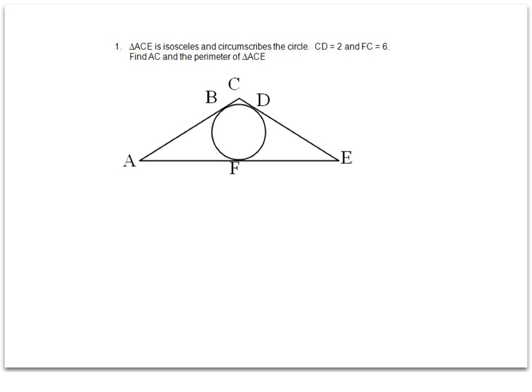Let's go ahead and set up the diagram with what we know. Now, because the triangle is isosceles, that means side AC is going to be equal to side CE.